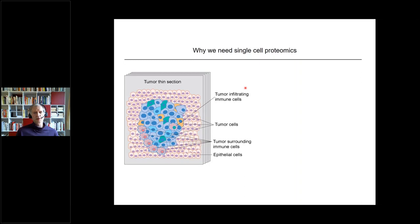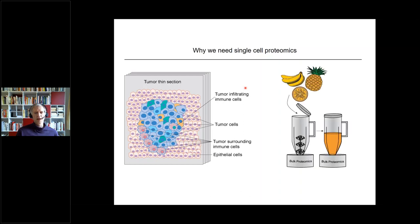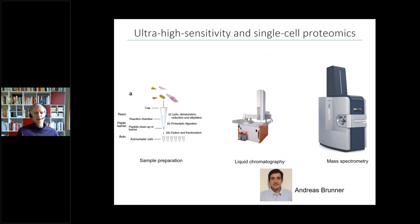Now coming to tissue. We've all seen the revolution in recent years where bulk measurements were replaced by single-cell measurement with great success in transcriptomics and other omics. The usual picture is that in one case you get a smoothie — everything blended together — but if you really want to know what's happening biologically, it would be very advantageous to know what's going on in the different cell types. This was just fantasy for proteomics until very recently, but not anymore.